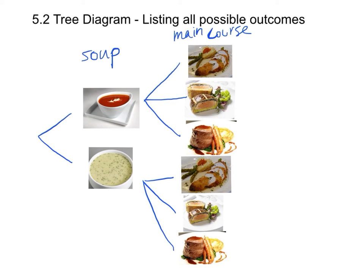Now we can summarize how many different choices or possible outcomes we can find in this situation. We have two choices in the soup and three choices in the main course, so there will be a total of six possible outcomes.